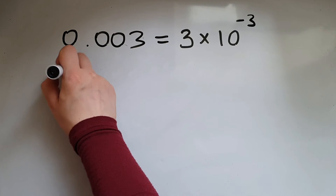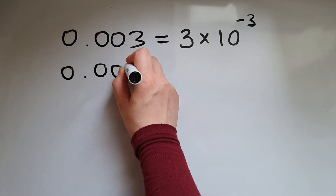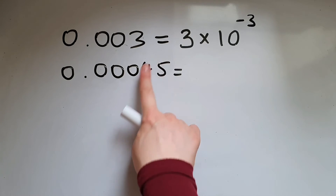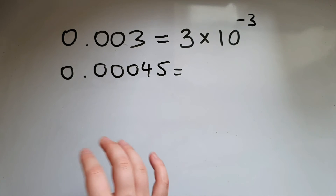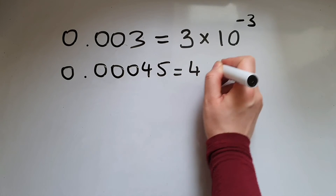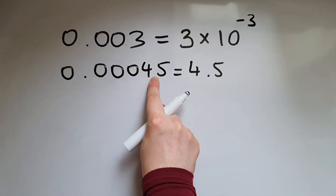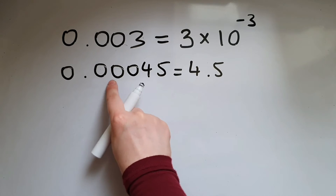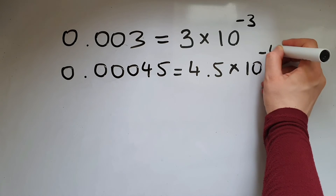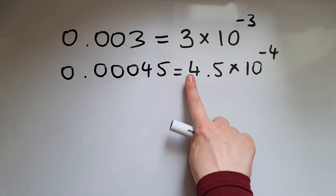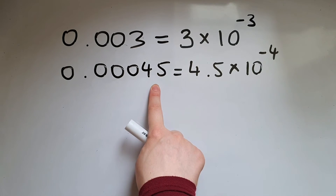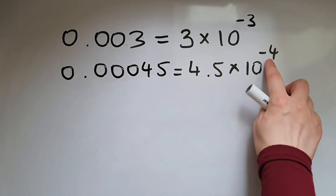If we have 0.000045, the number between 1 and 10 (inclusive of 1, not inclusive of 10) is going to be 4.5. You can imagine the decimal point being moved 4 places to the left, so this is 4.5 times 10 to the power of negative 4. 4.5 is much larger than 0.000045 — that's why we use the negative power.